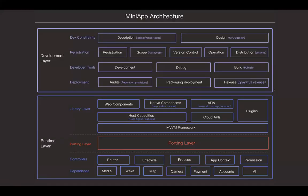Now I will show you the whole picture of the MiniApp architecture. The architecture contains two layers: the developer layer and the runtime layer. The MiniApp developer needs to get the restrictions, decide what functions and what function scope they need, set the version and operating and distribution settings, use development tools to build and debug the MiniApp, then publish it to the packaging deployment. When it passes to the audience, the developer can decide when and how to release it. The runtime layer has three parts: the library layer, the porting layer, and the controller layer.